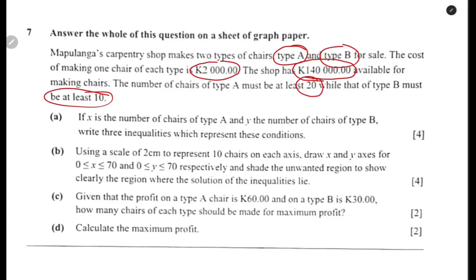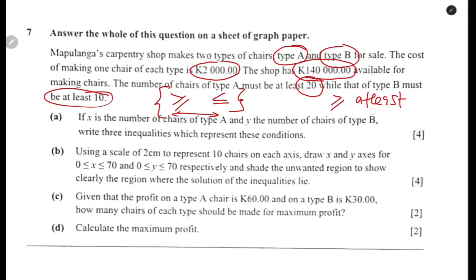Before we get into this, there are some terminologies you need to know. Here, use only two inequality symbols — greater or equal, or less or equal. It's not like in paper one where you use even greater and less. You only focus on these two inequalities. So if you have greater or equal to, everywhere you find 'at least,' just know that is greater or equal to.